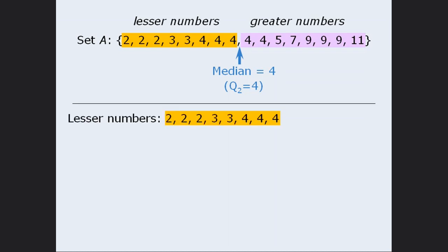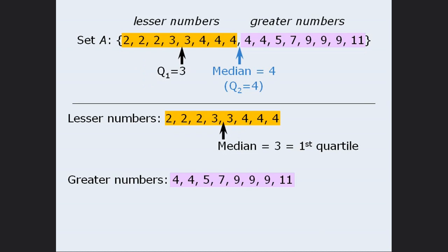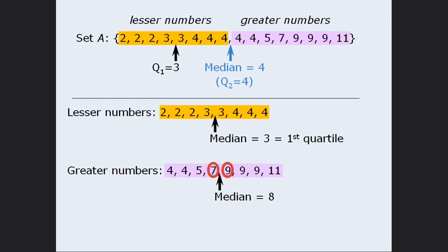Let's begin with the lesser numbers. There are 8 numbers altogether, so the median is right here, which means the median will equal the average of these two numbers. The average of 3 and 3 is 3, so the median of the lesser numbers is 3. So we say that 3 is the first quartile, which we can now add to our list. Next, when we find the median of the greater numbers, it's right here, which means the median will equal the average of 7 and 9, which is 8. So 8 is the third quartile, which we can now add to our list.